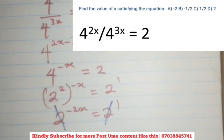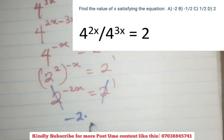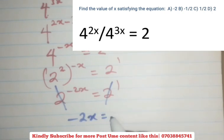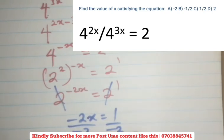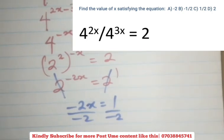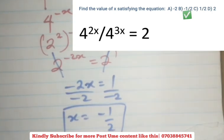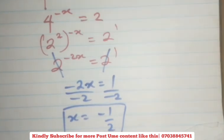And on this particular part here, you can see that the bases are the same. So when the bases are the same like that, you can just cancel the bases. So all you're going to be left with is minus 2x equals to 1. Then at this stage, you can just divide both sides by minus 2. So your final answer will be x equals to minus 1 over 2, which is right there in the option.